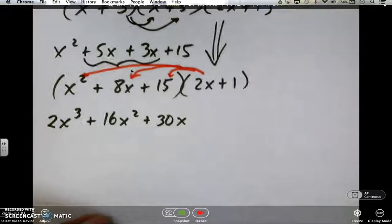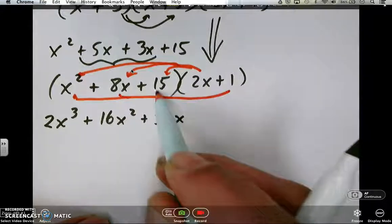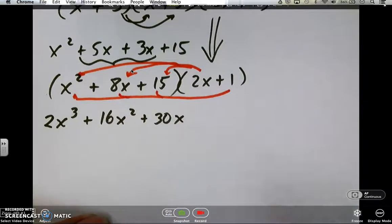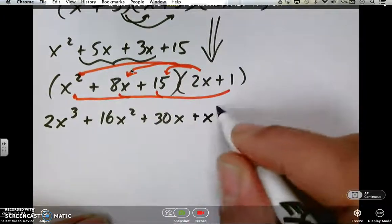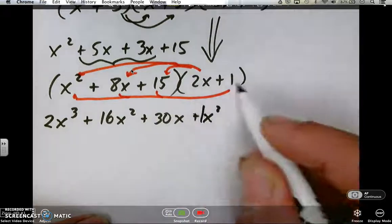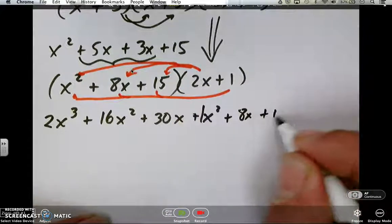What about the 1? Okay, so the 1 also needs to go times the x, times the 8, times the 15. Okay, so 1 times the x squared, x squared, 1x squared we'll say. 1 times the 8, 8x, and 1 times the 15, 15.